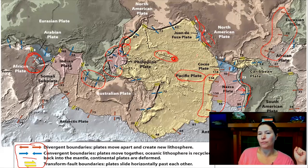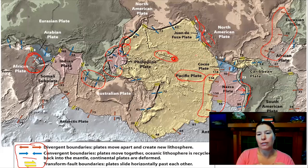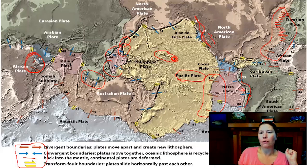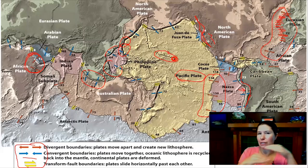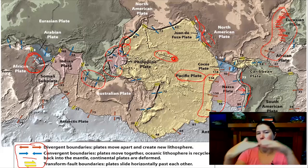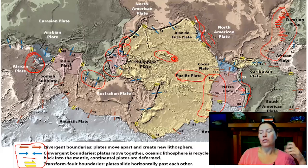Transform plate boundaries don't create crust and don't destroy crust—they're places where the crust relieves a little stress by sliding past one another. We have many small ones, usually perpendicular to spreading ridges. Think of a spreading ridge like the seam of a baseball wrapping around the earth; transform boundaries are the stitches that cut across, allowing stress to be released because the earth is spherical and plates can't just move apart in straight lines.